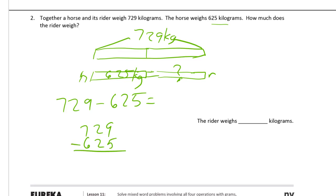9 minus 5 is 4, 2 minus 2 is 0, 7 minus 6 is 1. 104. Rider weighs 104 kilograms.